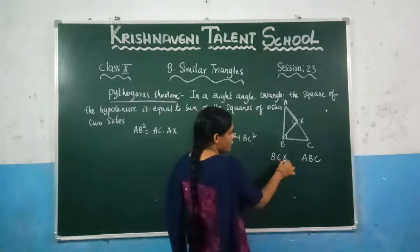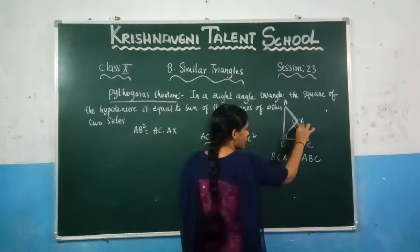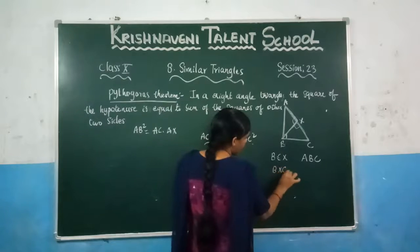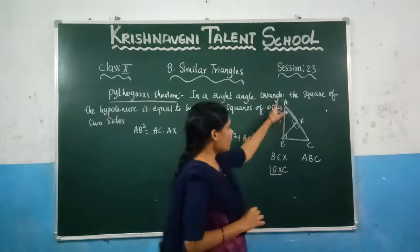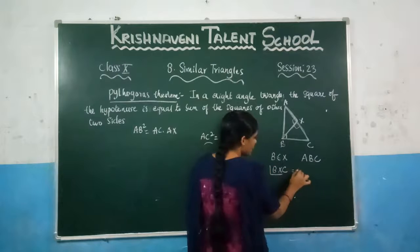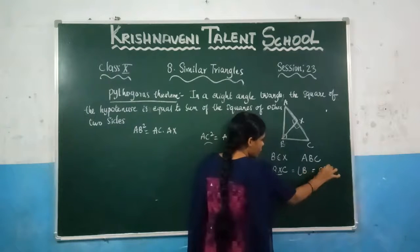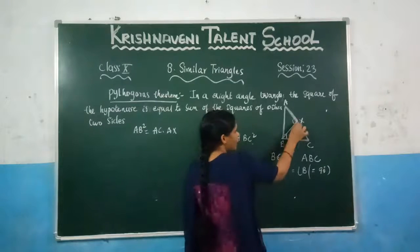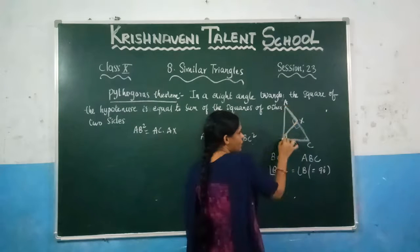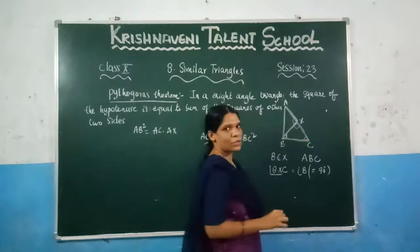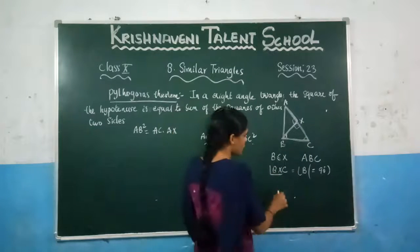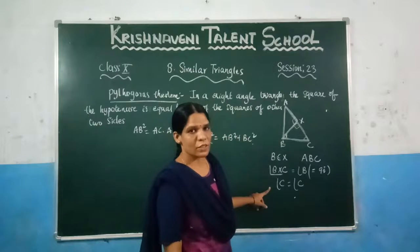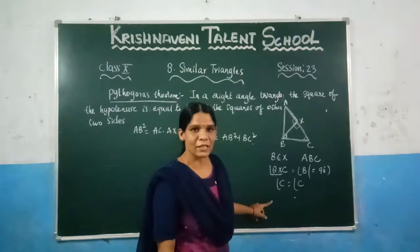In triangle BCX, by construction, angle BXC equals 90 degrees. And in the bigger triangle ABC, angle B is 90 degrees. So angle BXC equals angle B, because both are equal to 90 degrees. Now the common angle in these two triangles is angle C. Angle C equals angle C — it is the common angle.